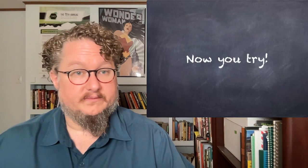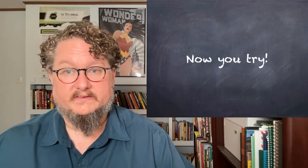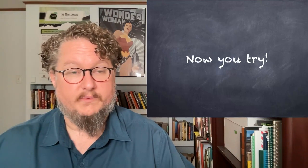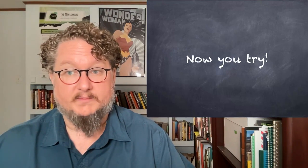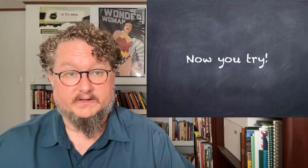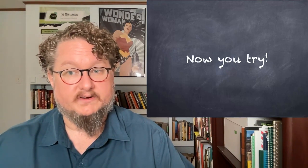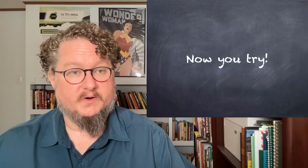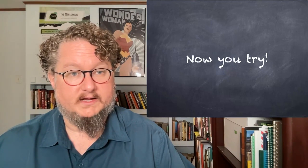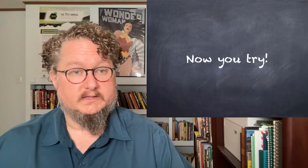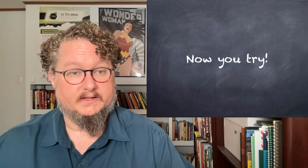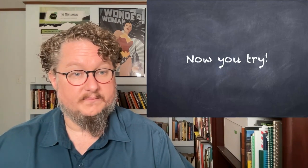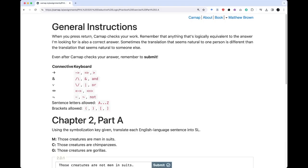So those are some examples, but the best way to learn this process is to try it yourself. I want you to give the practice problems a go and let me know if you have any questions. But before I end the lecture, let me show you how this process works in Carnap. Here we're looking at the chapter two, part A practice exercise, and I've put some general instructions here to give you a sense of how this works, including the different ways you can use your keyboard to represent our main connectives.